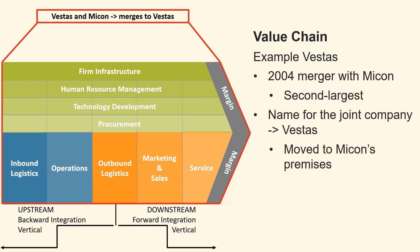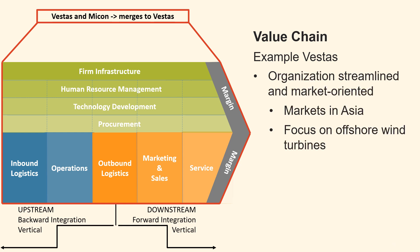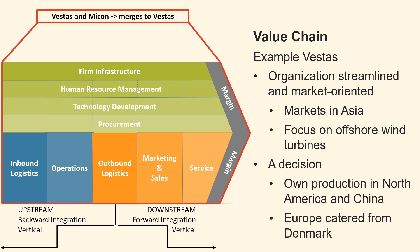Under the joint name Vestas, the headquarters were moved to Micon's premises in Randers. From 2005 and throughout the following years, Vestas focused internally on completing a genuine merger of the two companies, which, however, continued to operate side by side to an excessive degree. The organization became more streamlined and market-focused, adapting to the burgeoning markets in Asia and the heightened emphasis on offshore wind turbines. A decision was also made to set up production facilities in key regions such as North America and China, with Europe being catered to from Denmark.